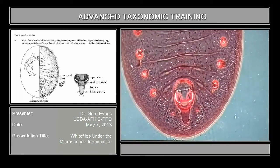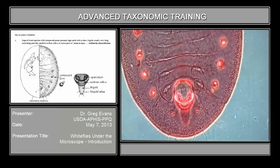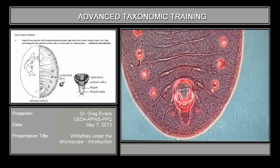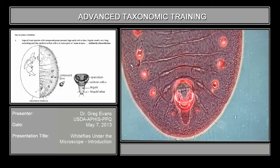This is the vasiform orifice, which is a very important structure in white flies. The shape of the orifice — whether it's triangular, chordate, or heart-shaped — and the shape of the operculum, how much of the orifice it fills up or if there's any reticulation on it. The shape of it, if it's transverse, longer than wide or wider than long. And this is the lingula. The important structure here is how far past the posterior margin of the orifice it extends and its setation.